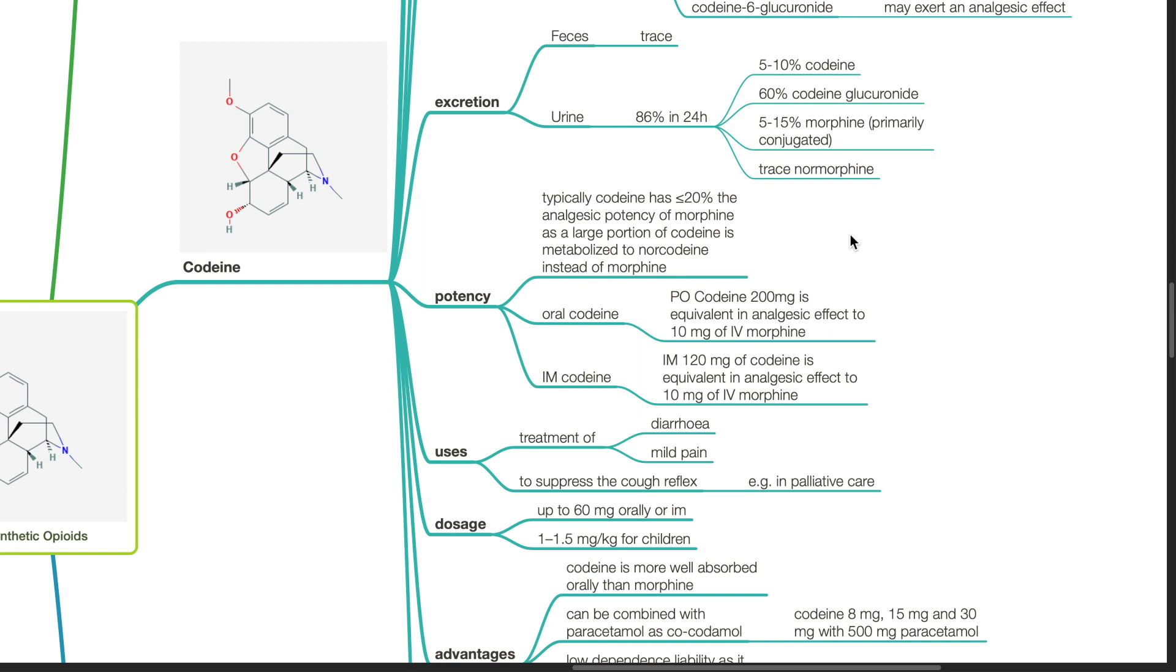Potency. Typically, codeine has 20% or less the analgesic potency of morphine, as a large portion of codeine is metabolized to norcodeine instead of morphine. Oral codeine 200mg is equivalent in analgesic effect to 10mg of IV morphine. IM 120mg of codeine is equivalent in analgesic effect to 10mg of IV morphine.